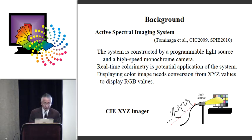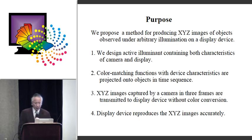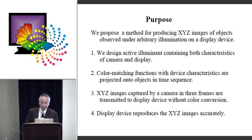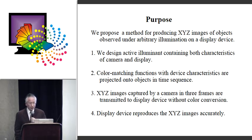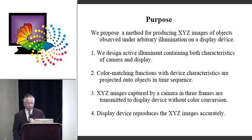However, in previous studies, when displaying color images, we still needed color conversion around XYZ values to display the image. The present work proposes a method for producing XYZ images of objects observed under arbitrary illumination on a display device. We designed an adjustment element which contains both the characteristics of the camera and display. The color matching function with device characteristics are projected onto the object in time sequence, so XYZ images captured by the camera in three frames are transmitted to the display device without color conversion.